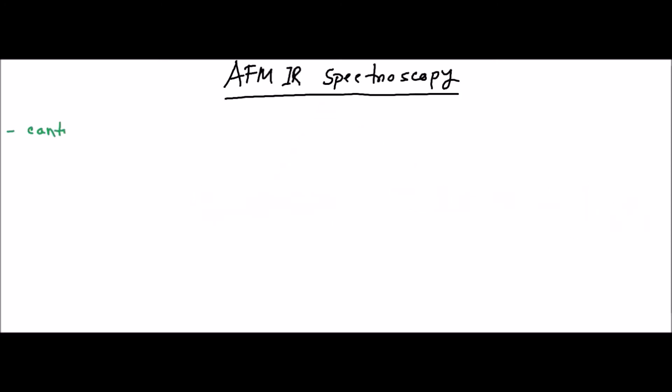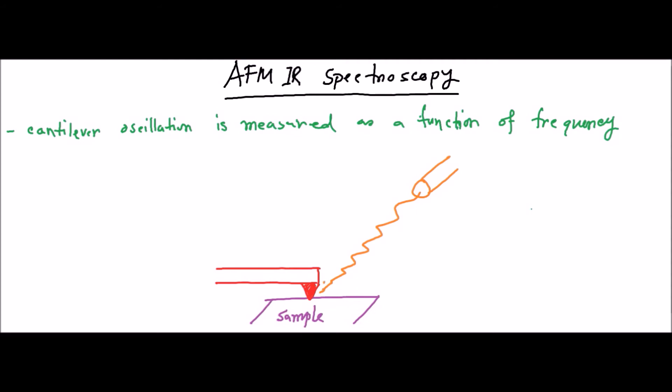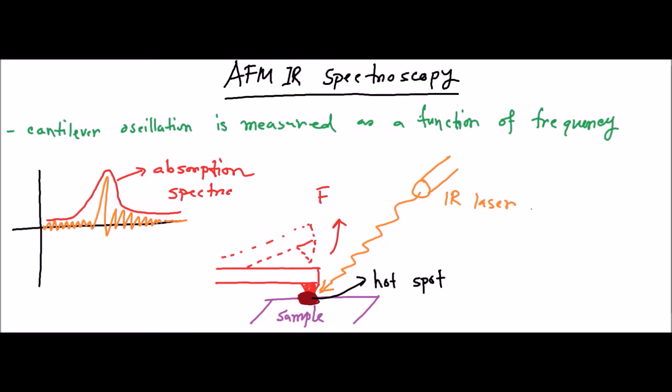In spectroscopic mode, cantilever oscillation is measured as a function of frequency or wave number. The tunable laser emits light with varying frequency or wave number. When the frequency is equal to the absorbing wavelength of the sample, it is absorbed by the sample and the resulting temperature increase causes an instant thermal expansion of the sample at that hot spot. This thermal expansion acts as a force on the cantilever and drives it into oscillation. The oscillation is proportional to the absorption coefficient of the material under observation. Since different materials absorb different wavelengths, the absorption spectra we get from cantilever oscillation is used to identify chemical species.